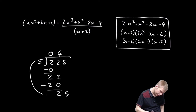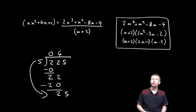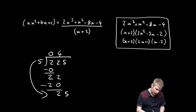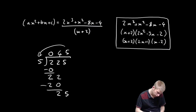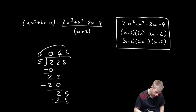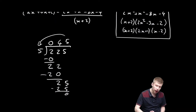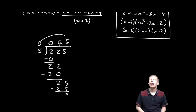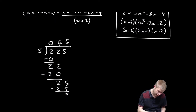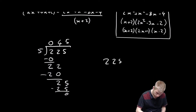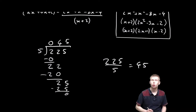The 5 comes down to join in, and finally how many times does 5 go into 25? It goes in 5 times. 5 times 5 is 25, so the remainder is 0. It all works out nicely, and 225 divided by 5 equals 45.